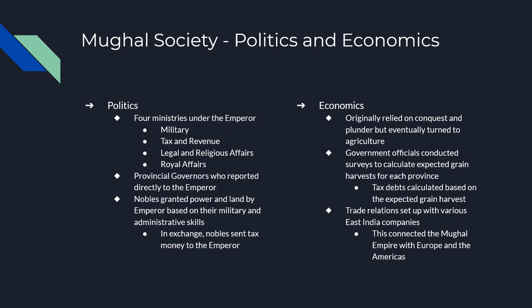For economics, a lot of their economic system was based on agriculture. Government officials would calculate the expected harvest for each part of the empire, and the results of that expected harvest would determine the expected tax the people were supposed to pay. They also had trade relations with the Dutch East India Company and the British East India Company, which spread Mughal goods throughout the world, especially in the textile trade. Clothing from the Mughal empire was worn around the world.